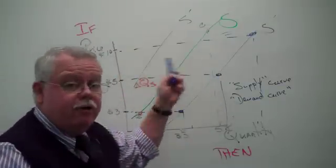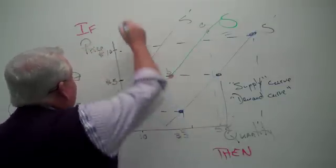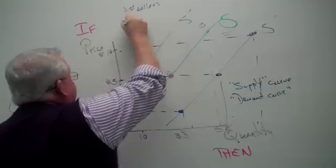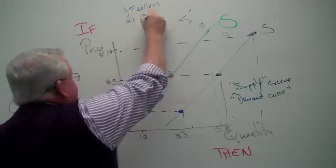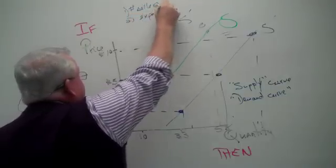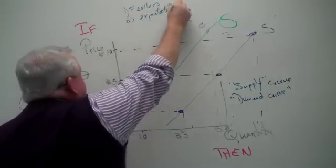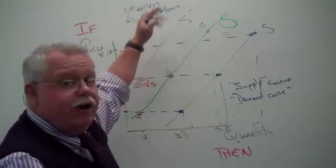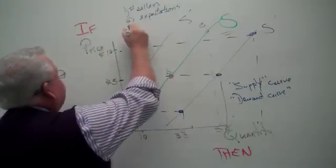What kind of things can make the supply curve shift? One, number of sellers. Two, seller's expectations. See, that's very close to demand. The same kind of stuff. The number of people selling it, and it's changing their expectations. But what else?